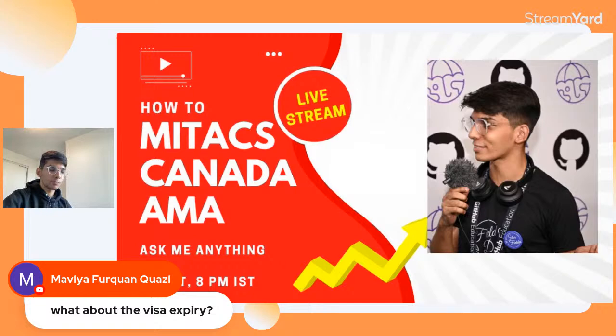What about the visa expiry? I think you get a 10-year visa. The visa doesn't expire for 10 years, although you can only stay in Canada for six months at a time, and can do work as part of the internship only for three months.